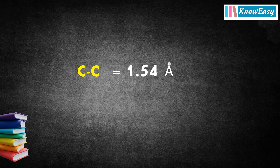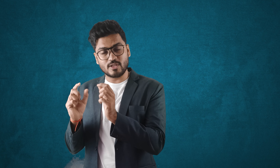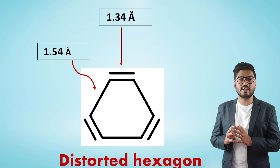An important point here is that carbon-carbon single bond length is 1.54 Å (0.154 nm), carbon-carbon double bond length is 1.34 Å, and carbon-carbon triple bond length is 1.20 Å. According to Kekulé, benzene contains two types of bonds: carbon-carbon single bond and carbon-carbon double bond in alternating fashion. If drawn according to proper bond lengths, the single bonds would be longer and the double bonds shorter, giving a distorted hexagonal structure.